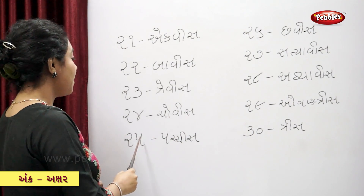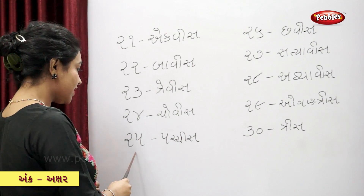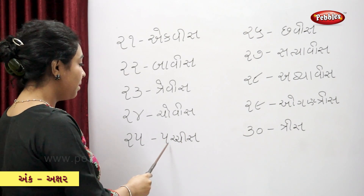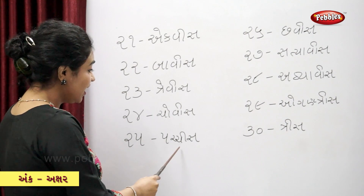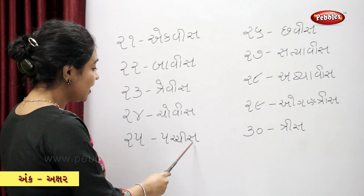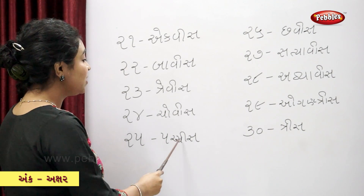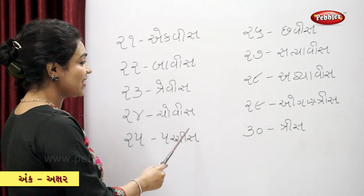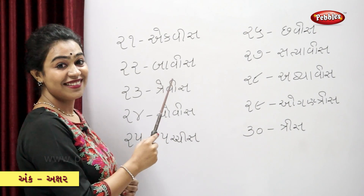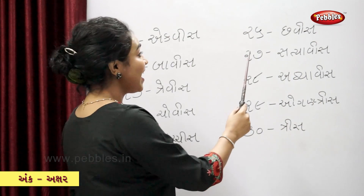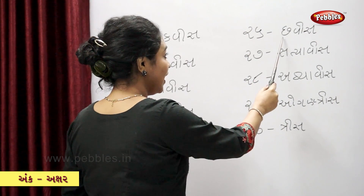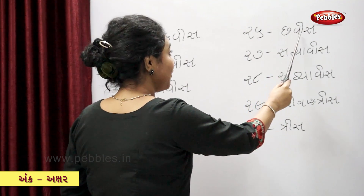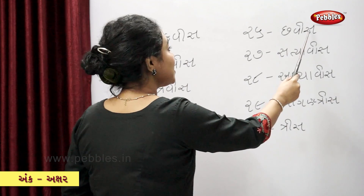Pachies — twenty-five. Chavies — twenty-six.